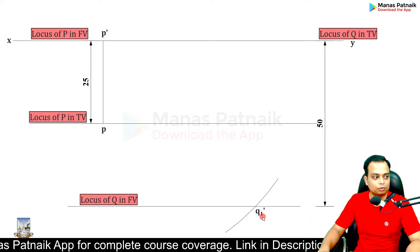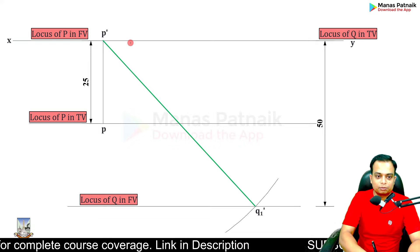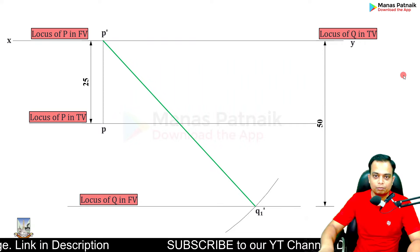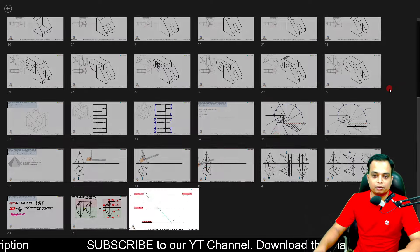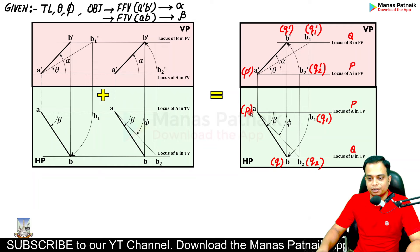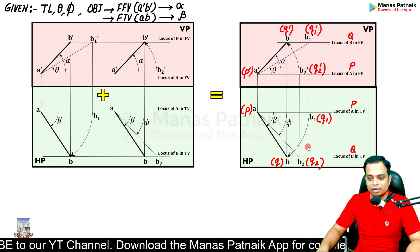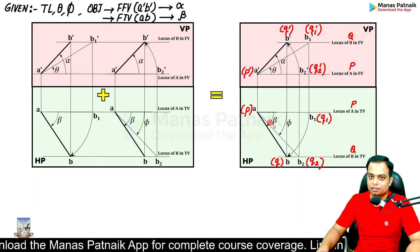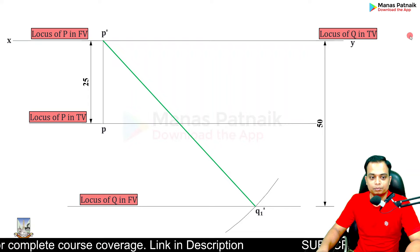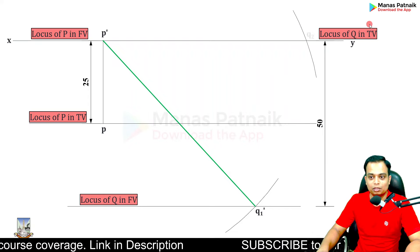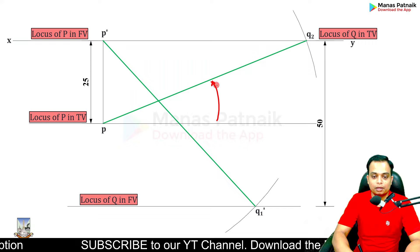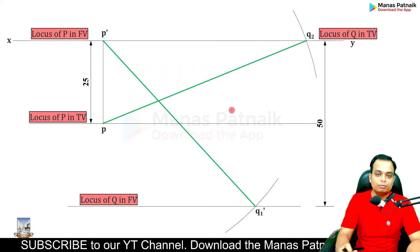This intersection point is Q1-dash. Connect P-dash to Q1-dash — that is the true length, and the angle it makes is theta, which you can measure. Second, with P as center and radius 70 mm, cut another arc on the locus of Q in top view. This gives Q2. Connect P to Q2 — that true length gives you angle phi, which you can measure with a protractor.